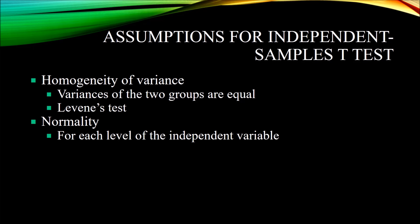Then we have the assumption of normality, which means that for each level of the independent variable, the dependent variable is normally distributed. In the case of gender and depression, all the depression scores for males would have to be normally distributed, and all the scores for females would have to be normally distributed. We determine if data meet the assumption of normality using a variety of statistics, including the Shapiro-Wilk test, which is a common statistic for testing normality. Using an alpha of 0.05: if the p-value is less than 0.05, you would assume the data are not normally distributed; if it's greater than 0.05, that provides evidence the data are normally distributed.